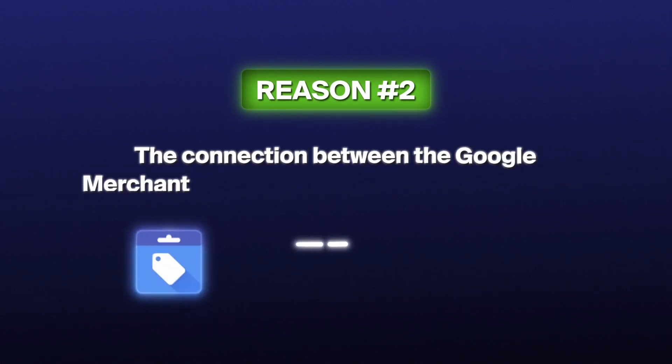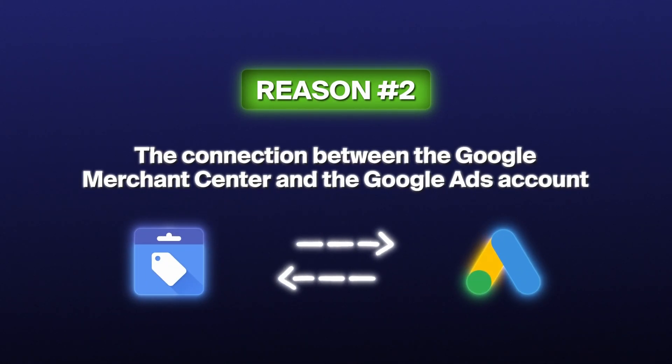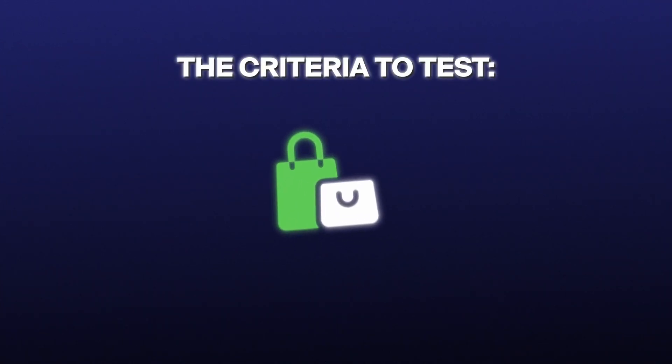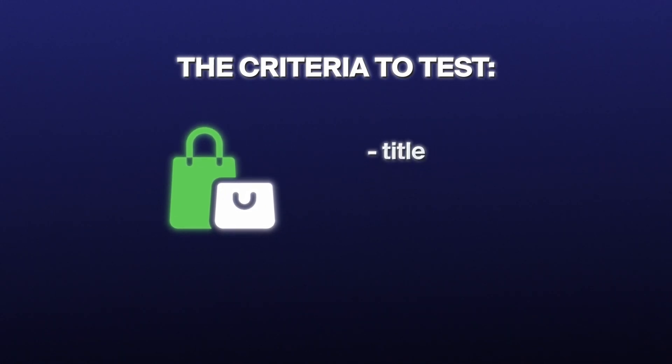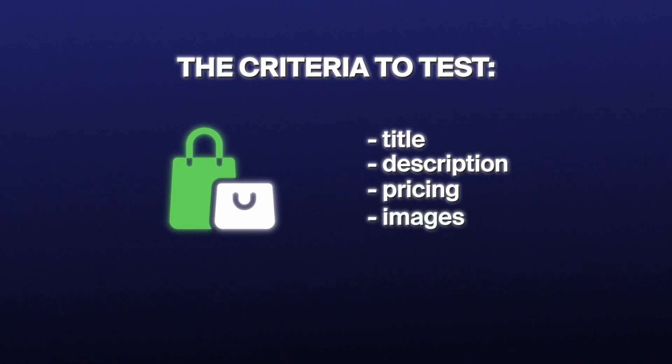Reason number two why your Google Ads account might not be taking off in terms of ad spend and impressions is the connection between Google Merchant Center and your Google Ads account. Google generates all data from your products and website and validates them in the Merchant Center — a very important platform where they test if you are a verified advertiser and what kind of products you're selling, including criteria around the title, description, pricing, images, and so on.